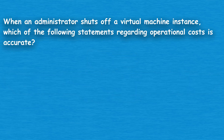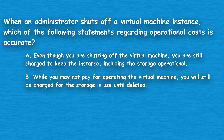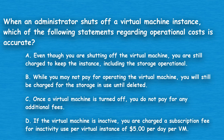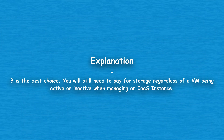The next question: when an administrator shuts off a virtual machine instance, which of the following statements regarding operational costs is accurate? Option A: Even though you are shutting off the virtual machine, you are still charged to keep the instance including the storage operational. Option B: While you may not pay for operating the virtual machine, you will still be charged for the storage in use until deleted. Option C: Once a virtual machine is turned off, you do not pay for any additional fees. Option D: If the virtual machine is inactive, you are charged a subscription fee of $5 per day per VM. The correct answer is Option B. You will still need to pay for storage regardless of a VM being active or inactive when managing an IaaS instance.